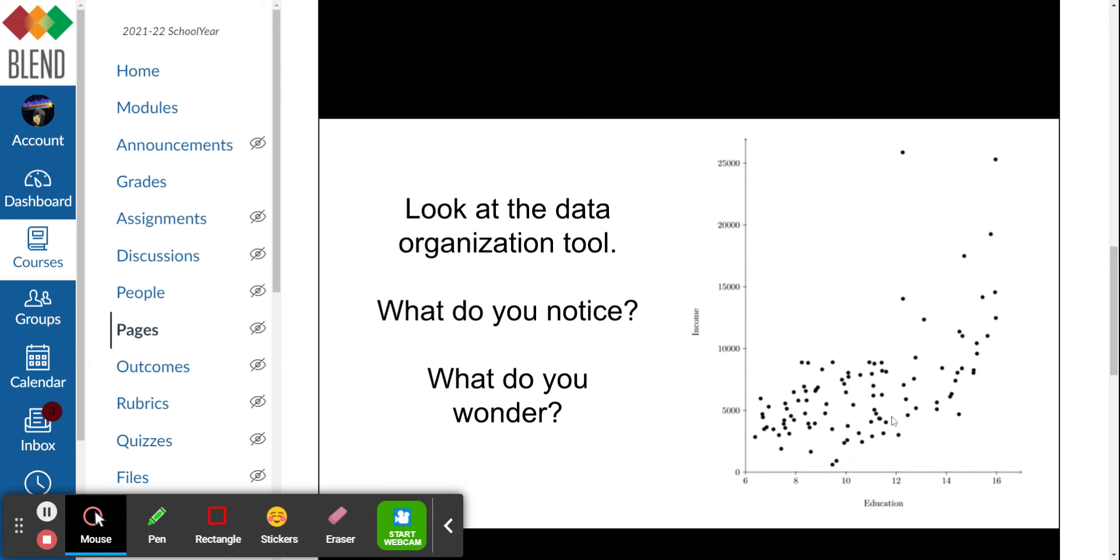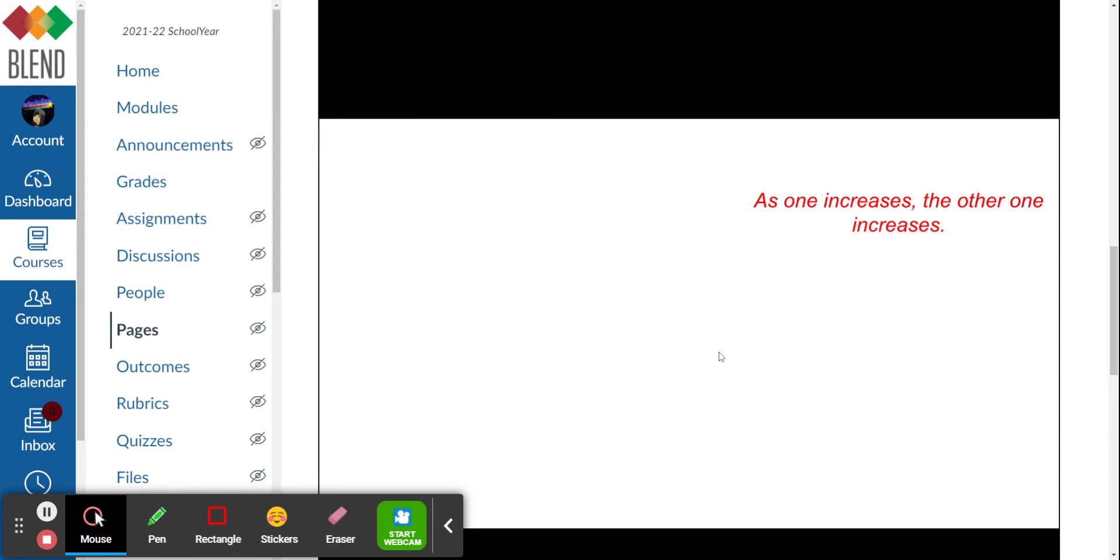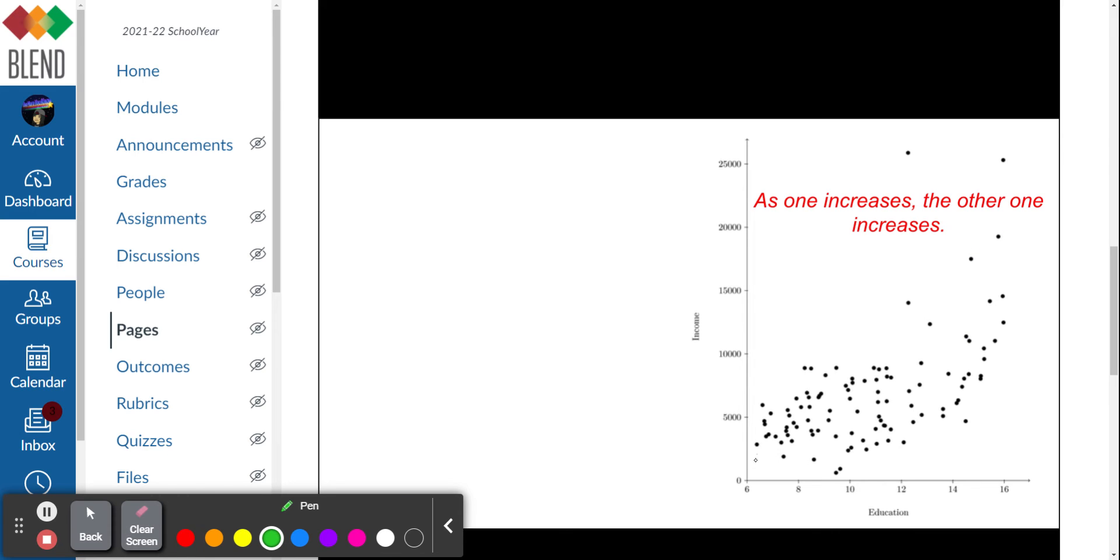What do I wonder? I wonder all sorts of stuff, like when was this taken? Is this years of education including college? Is this how much money they make a year or a month? As one increases, the other one increases. We did figure that out - as the x-axis got bigger, the y-axis got bigger too. You can kind of see, once again, that we have a general pattern where we're going up on both.